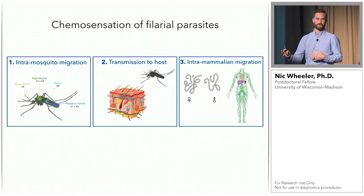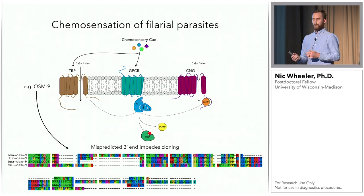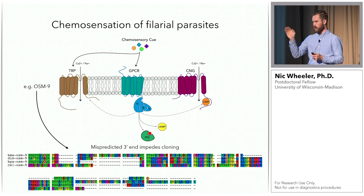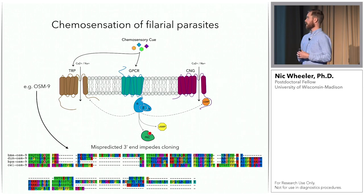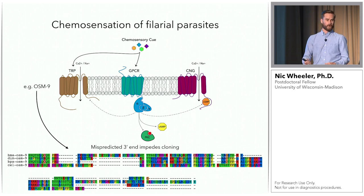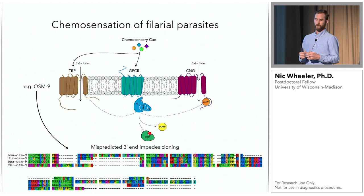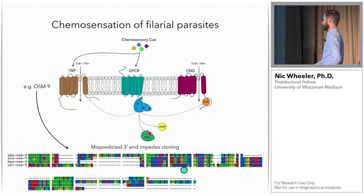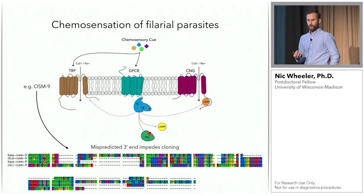Our idea is that these biological processes could be inhibited by some anti-helminthic to stop transmission. In nematodes we know what the chemosensation pathway looks like: chemosensory cues activate GPCRs on the nose of the nematode, which then activate ion channels such as OSM-9 — a TRPV channel — or CNG channels depending on cell type. OSM-9 is a target we're interested in. We wanted to clone it and express it to pharmacologically characterize it. Unfortunately in Brugia malaii there's a mispredicted three prime end — the C. elegans OSM-9 is completely characterized, but the Brugia malaii model is completely off, suggesting the gene model is incorrect.